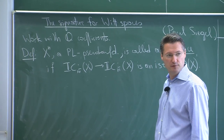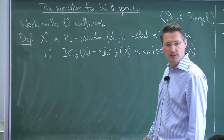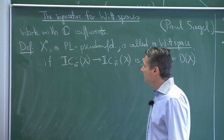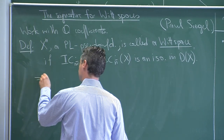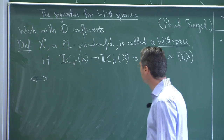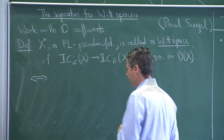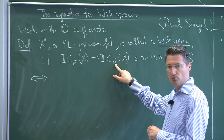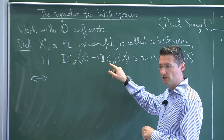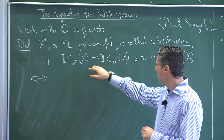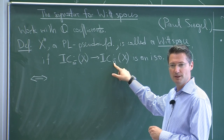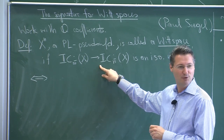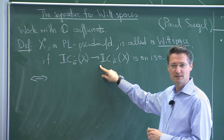Notice that if you have a smaller perversity P and a bigger one Q, there is always a canonical map between them — you can see this from Deligne's formula very easily. If P ≤ Q there is an inclusion map of complexes from one to the other, and if this is an isomorphism in the derived category (a quasi-isomorphism), then I call the space a Witt space. This is equivalent to saying that for all even-dimensional links of odd-codimension strata — say of dimension 2ℓ — the middle intersection homology with the lower middle perversity should vanish.